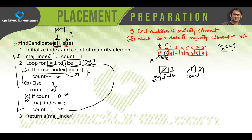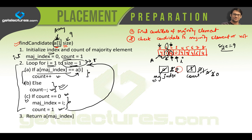Now i becomes 2, pointing to the value 4. But maj_index is currently pointing to 1, so 4 and 1 are not equal — we execute count-- and count becomes 0 again. So maj_index is updated to 2, count reset to 1. Moving to i=3, which holds value 0, and maj_index points to 4 — they are not equal, so count-- and maj_index is updated to index 3.